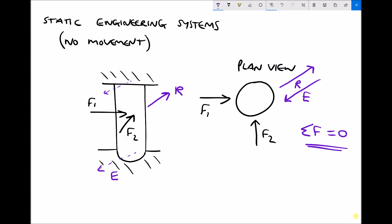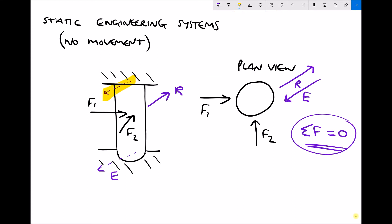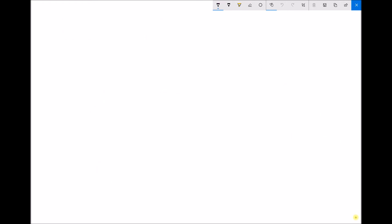The question is: where does the equilibrium force come from? If we have a resultant force acting on the object, the equilibrium force comes from the supports at the top and bottom of the pillar. How they're distributed depends on the height at which F1 and F2 are applied, but the supports provide the equilibrium force. In a dynamic system there's a net force causing acceleration, but in a static engineering system the sum of the forces equals zero.